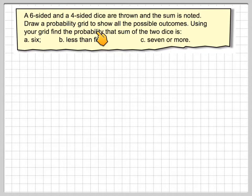A six-sided and a four-sided dice are thrown and the sum is noted. Draw a probability grid to show all the possible outcomes. Using your grid, find the probability the sum of the two dice is: a) six, b) less than five, c) seven or more.